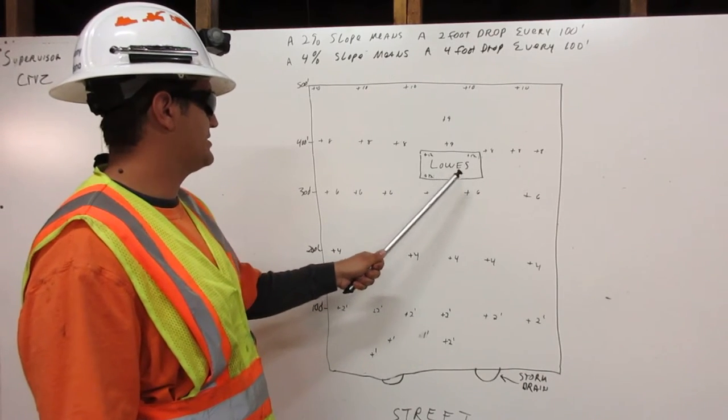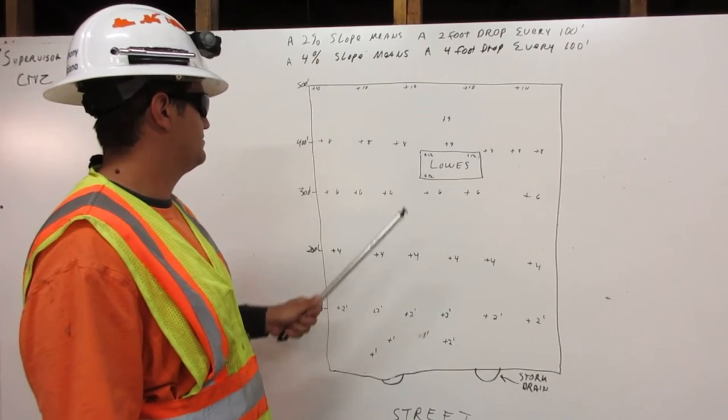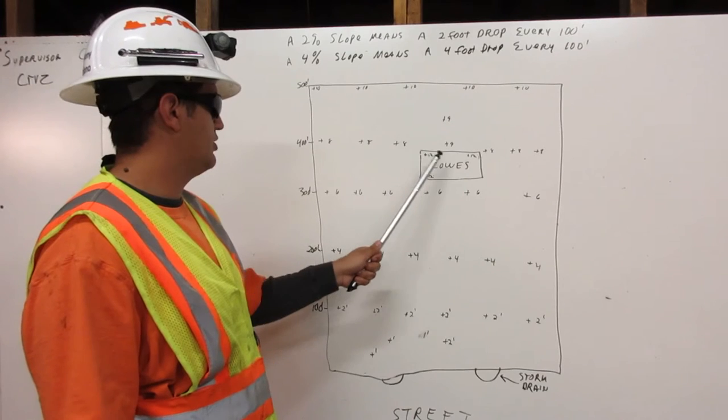Then we go to the Lowe's, and the building has to be 2 feet higher than the 10 feet mark. So the Lowe's is 12 feet higher.